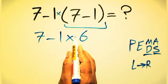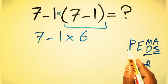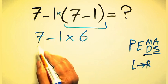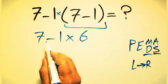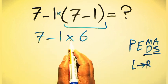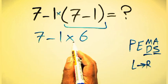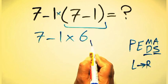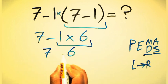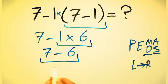Now we have one subtraction and one multiplication. So here, first we have to do this multiplication: 1 times 6 gives us 6. So we have 7 minus 6, which equals 1.